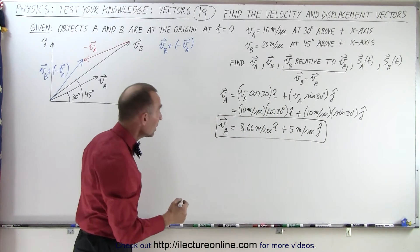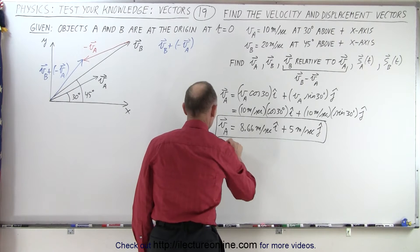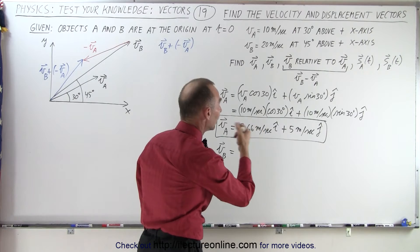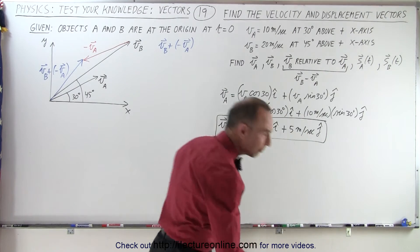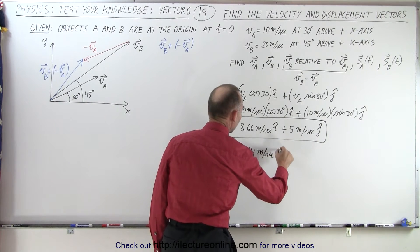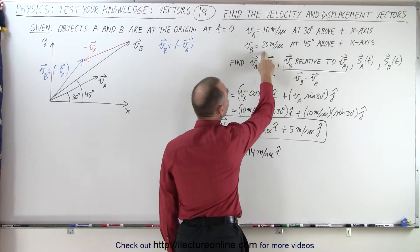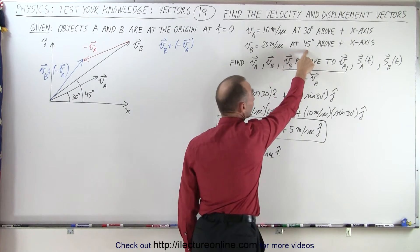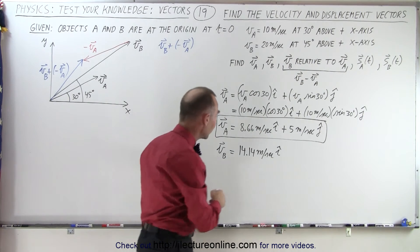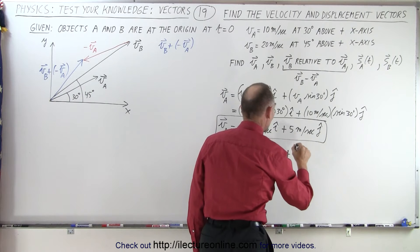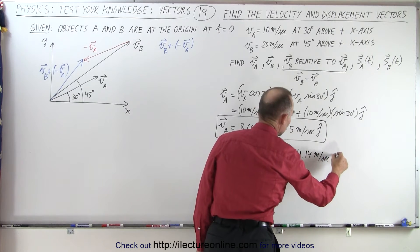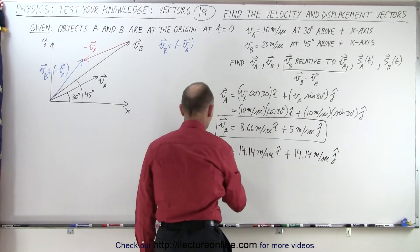Now we do the same for B. Velocity vector B has a magnitude of 20 m/s at 45 degrees. Since cos(45°) = 0.707, we get 20 × 0.707 = 14.14 m/s in the i-direction. The y-component is the same: 14.14 m/s in the j-direction.